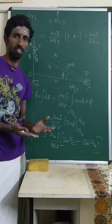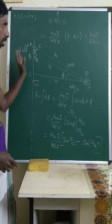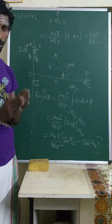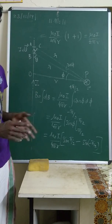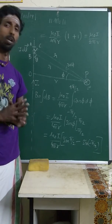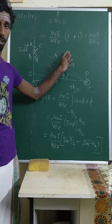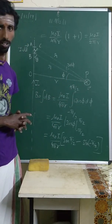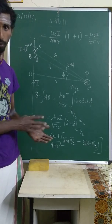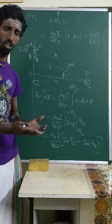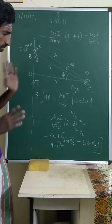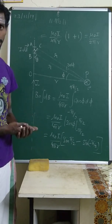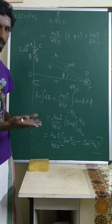Ampere's circuit law gives this same formula directly, but it can only be applied to an infinite current-carrying wire. Biot-Savart law, through this derivation, can also handle finite wires, one-side-infinite wires, and any shape — square, rectangle, hexagon. In upcoming classes we will derive results for a finite wire and a square wire.